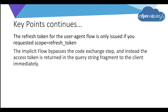When you create a connected app, you can add a scope for refresh token — if that scope is not given, you will not get the refresh token back from the authorization server. Implicit flow bypasses the code exchange step, and instead the access token is returned in the query string fragment to the client immediately.